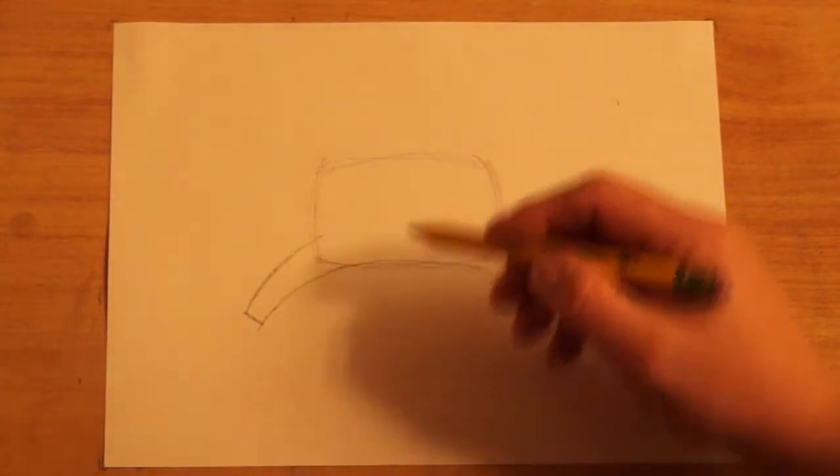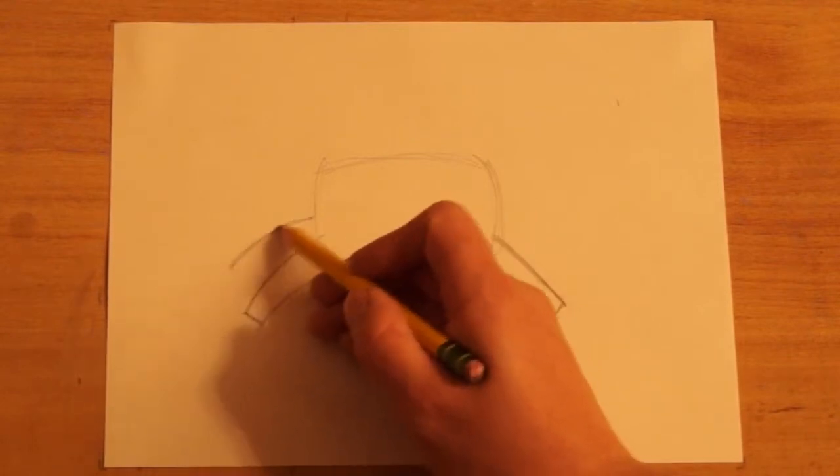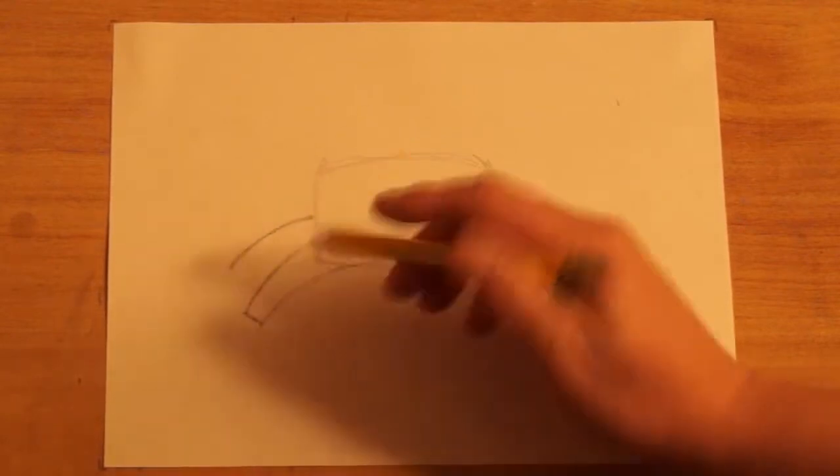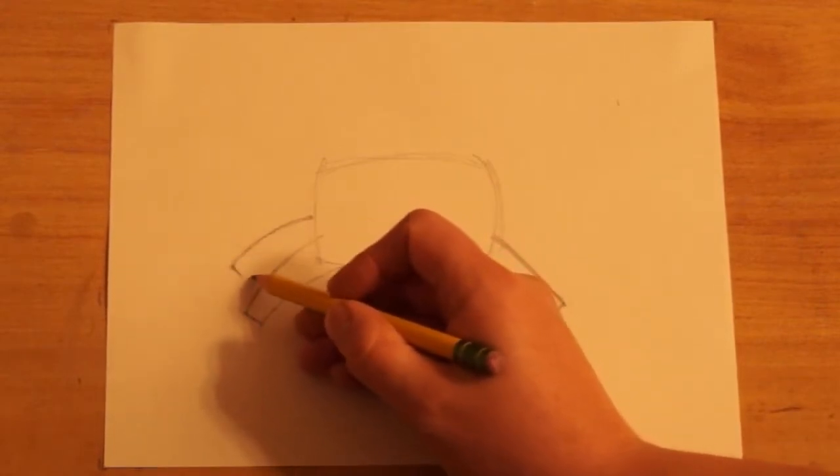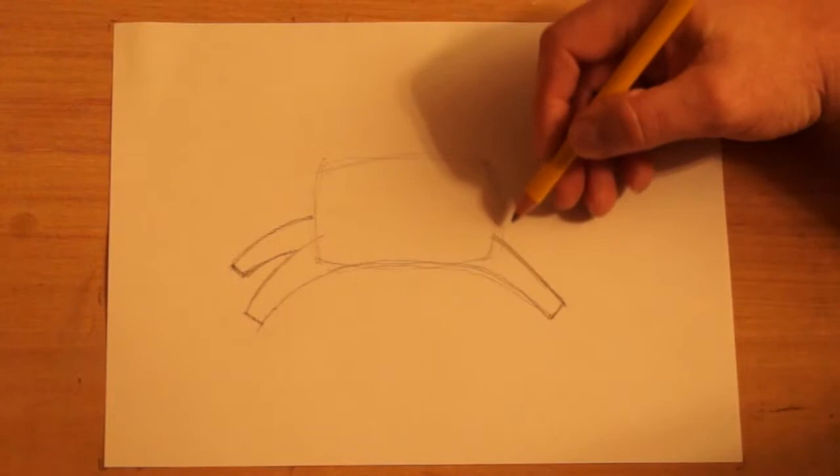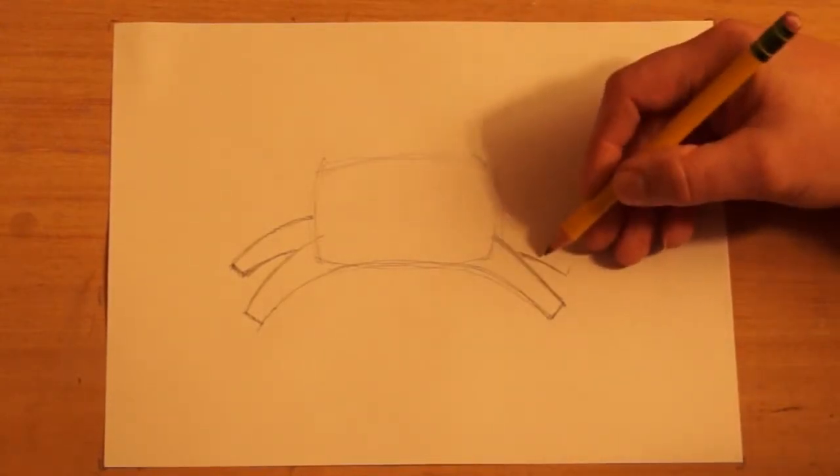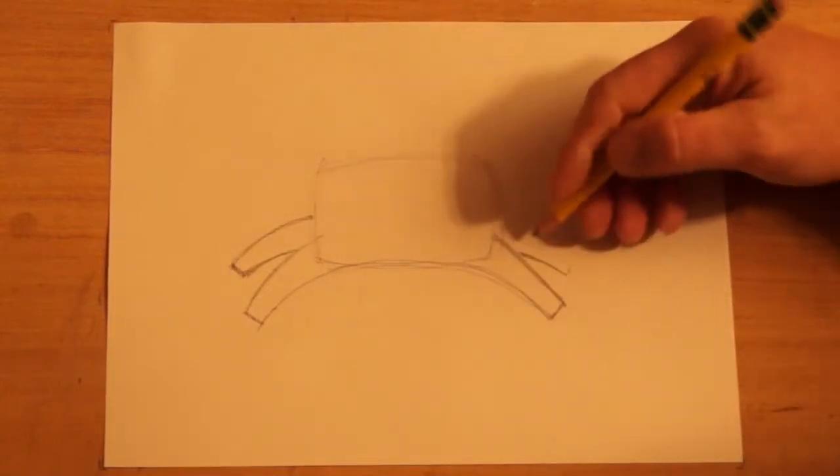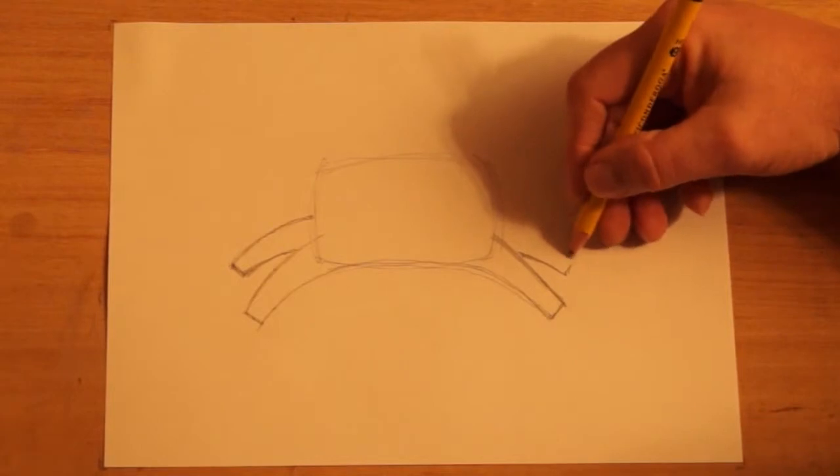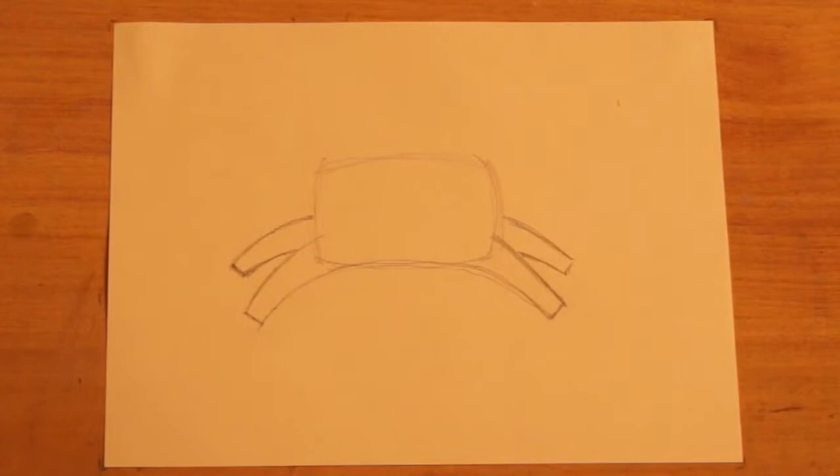Now I'm going to go ahead and draw a second line here, a second curve. And this is going to be for the other leg. It's on the other side of the body, so part of it is covered up. You don't see all of it. And we're going to do the same thing here in the back. It's a little bit higher because it's further away, and also it's not as long because it looks like it's farther away as well. So this is the front two legs and the back two legs.